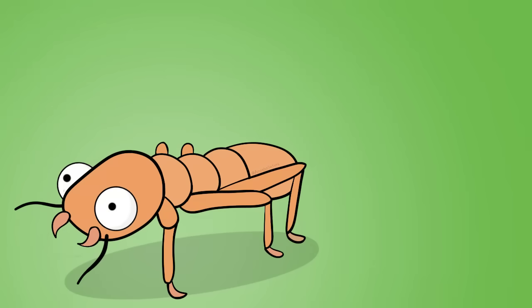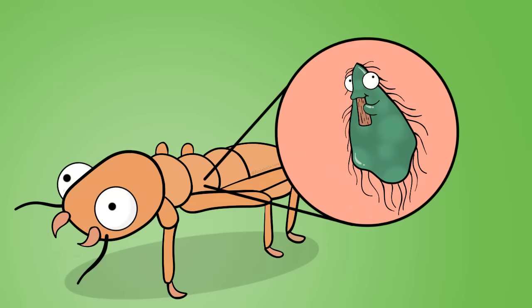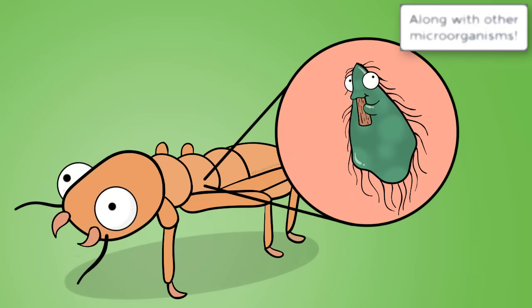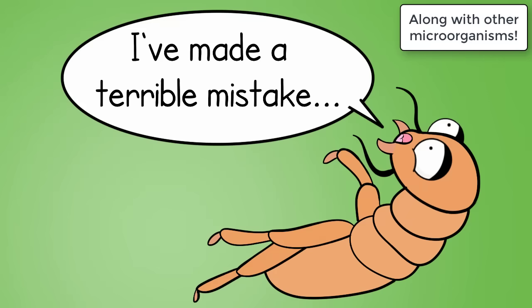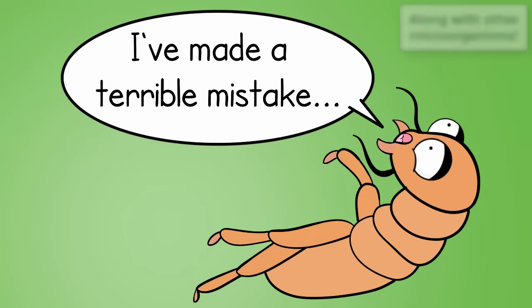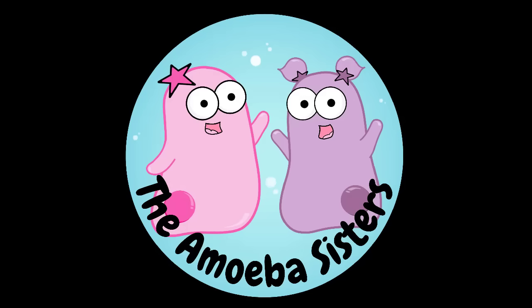One of our favorite examples? The termite. Termites can have prokaryotes that live in their gut and help them digest wood. And without them? Let's just say digesting wood wouldn't happen so well. That's it for the Beepa Sisters—we remind you to stay curious.